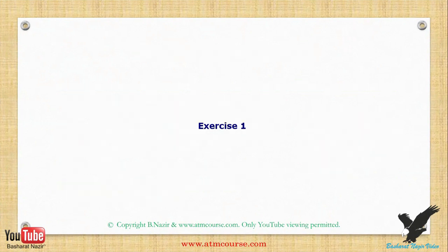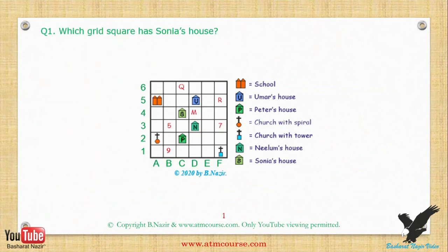Exercise one. Which grid square has Sonia's house?